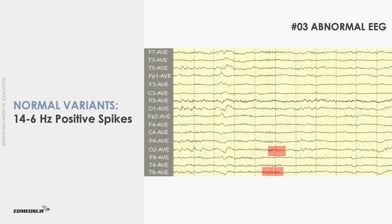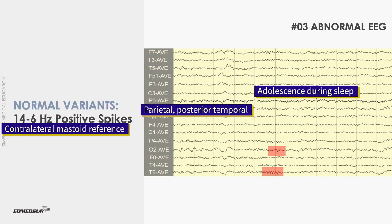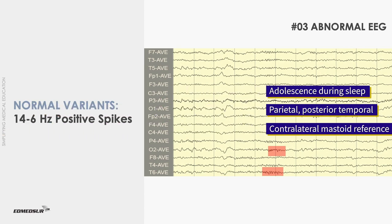14 and 6 Hz positive spikes are apiculate waveforms that usually last for about 1 second. The 14 Hz component is more commonly seen than the 6 Hz component, but both may occur simultaneously, as can be seen here. They are usually seen in adolescence during sleep, maximum in the parietal and posterior temporal region, and can be either bisynchronous or unilateral. They may be difficult to recognize in bipolar montages and are best seen in montages with long inter-electrode distances, like ear reference or contralateral mastoid reference montages.